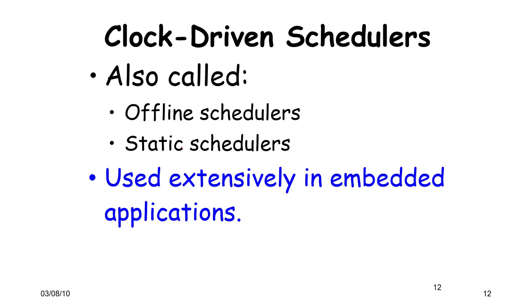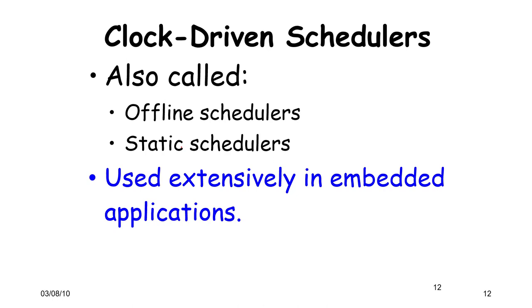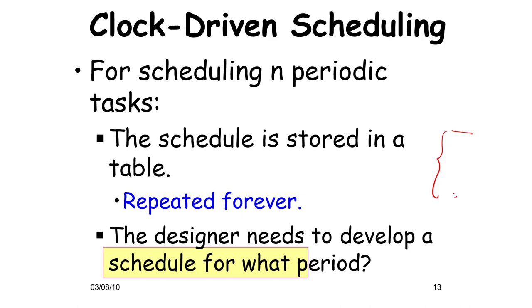We will discuss two kinds of algorithms: table-driven and cyclic schedulers. Clock-driven schedulers are also called offline or static schedulers, primarily because they store the schedule; the amount of dynamic computation is often negligible or zero. For n periodic tasks the schedule is stored in a table and repeated forever. The question is: how long should this table be — what should the period capital P be — after which the same schedule can be repeated?